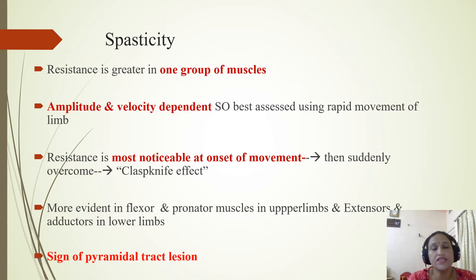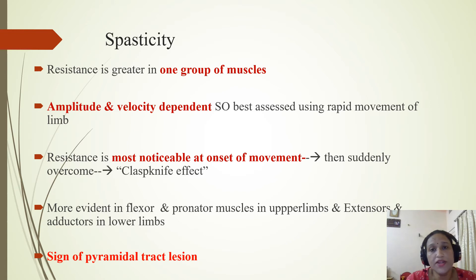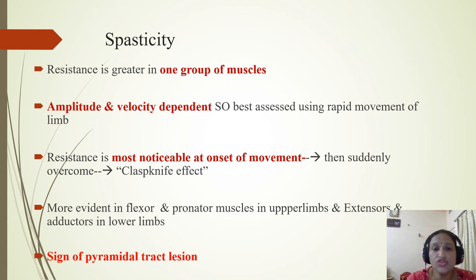In spasticity, resistance is greater in one group of muscles, meaning one group is more involved than the other. It is also amplitude and velocity dependent — when a particular amplitude and velocity of movement is reached, we can feel spasticity. Resistance is most noticeable at the onset of movement and is then suddenly overcome, which we call the clasp knife effect.